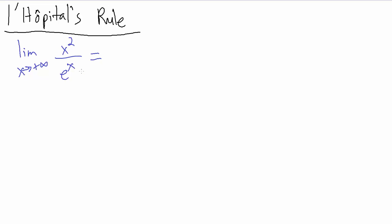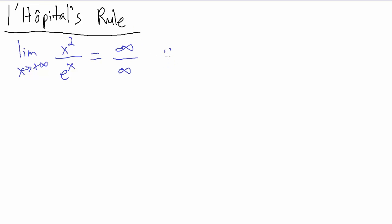Remember, when evaluating limits algebraically the first thing we always want to do is try direct substitution. As x goes to positive infinity, x squared goes to infinity, and e to the x also goes to infinity. So we have infinity over infinity, which is one of the seven indeterminate forms. This makes us happy because it tells us we can use L'Hôpital's rule — and since we have infinity divided by infinity, we can apply it directly without any algebraic manipulation.